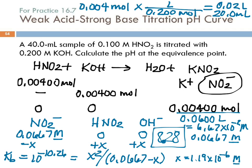Does that seem reasonable? Yes — we're titrating a weak acid with a strong base, so we expect the pH to be basic, higher than 7. It ended up being 8.28, higher than 7. That doesn't prove it's correct, but it means we didn't screw up completely.